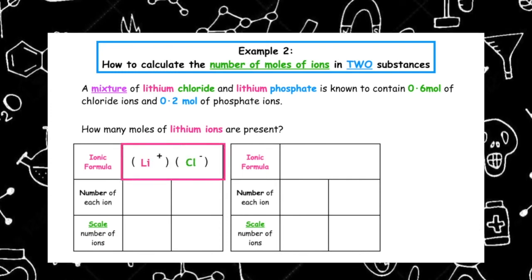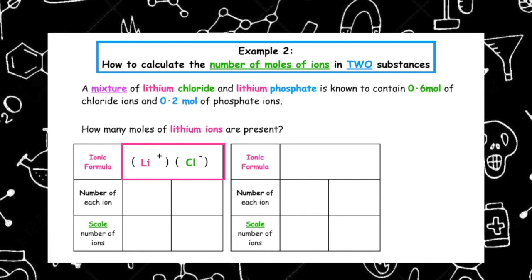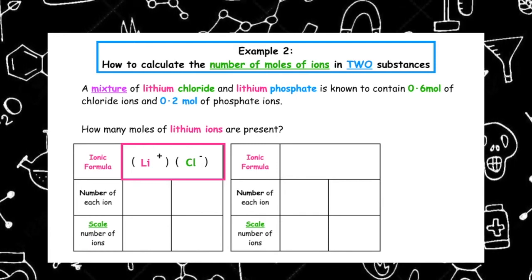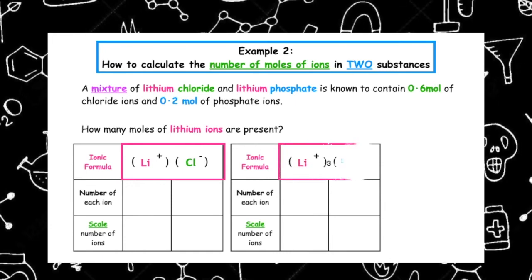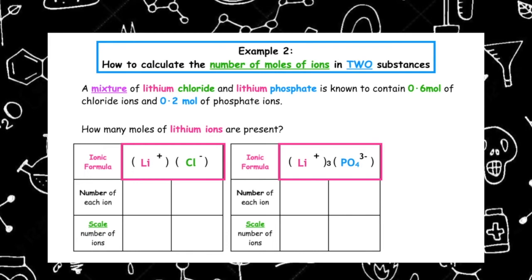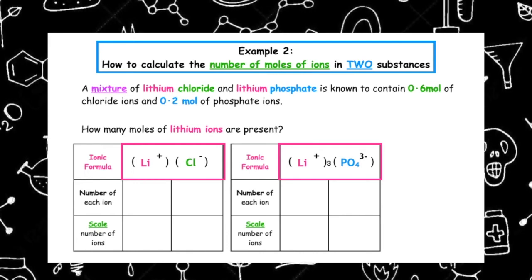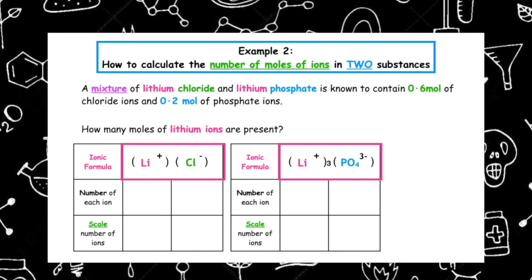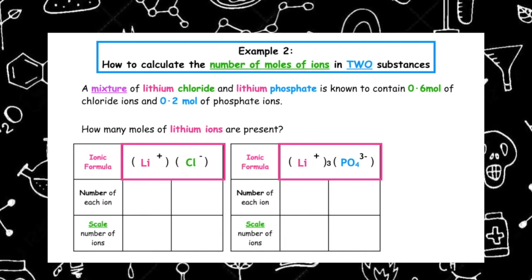The ionic formula for lithium chloride is Li⁺, Cl⁻. The ionic formula for lithium phosphate is (Li⁺)₃(PO₄³⁻).